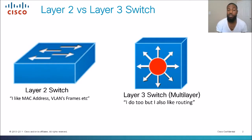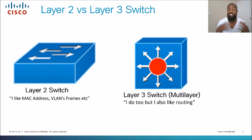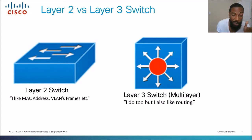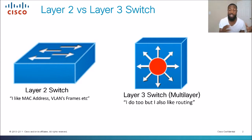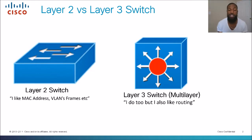What is a Layer 2 and Layer 3 Switch? Simply put, one deals with Layer 2 — MAC addresses, frames, VLANs, and stuff like that. The Layer 3 Switch does basically the same thing as a Layer 2 Switch, but it also does routing. For the Cisco CCNA exam, we need to get deeper and talk about what Layer 2 and Layer 3 are and what the differences between the two are.